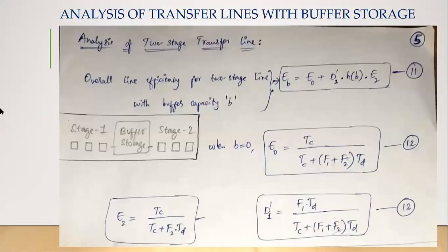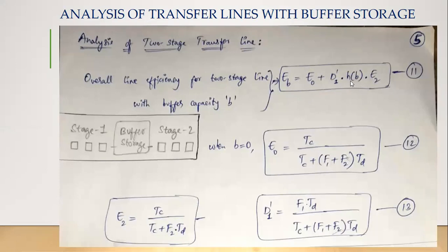For a two-stage transfer line, there is a buffer storage in between the two stages. Each buffer storage divides the line into two stages; two storage buffers would give three stages. The overall efficiency of a two-stage line with buffer capacity b is given by: eb = e0 + d1' · h(b) · e2. We will define these terms in the next slide.